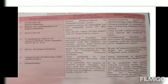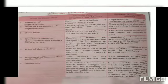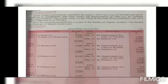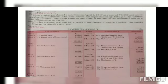Today we will solve a new question. In the last class we discussed the difference between straight line method and original cost method, and today we will discuss some numerical questions on written down value method.